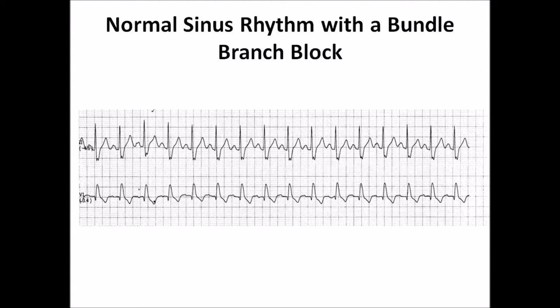Bundle branch block can either be left bundle branch block (LBBB) or right bundle branch block (RBBB). There are certain criteria to make a bundle branch block interpretation. However, generally by looking at V1, if the QRS is predominantly negative, the block is most likely LBBB; and if the QRS is predominantly positive, the block is most likely RBBB.